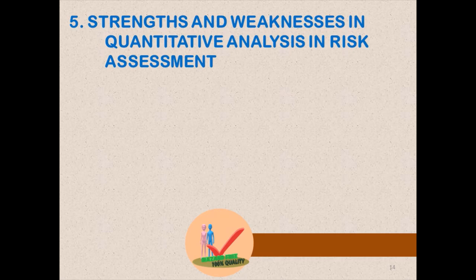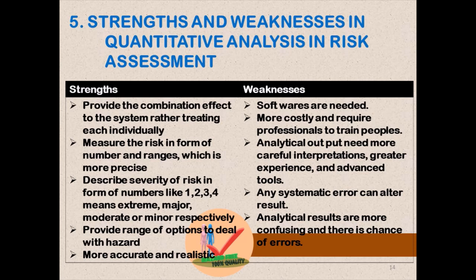The strengths of quantitative risk analysis include: providing the combined effect on the system rather than treating each hazard individually; measuring risk in the form of numbers and ranges which is more precise; describing severity of risk in numerical form — for example, one to four meaning extreme, major, moderate, or minor respectively; and providing a range of options to deal with hazards, making it more accurate and realistic. Weaknesses include: specialist software is needed; it is more costly and requires professionals to train people; analytical output needs more careful interpretation; great experience and advanced tools are required; any systematic error can alter the results; and analytical results can be more confusing with a chance of errors.